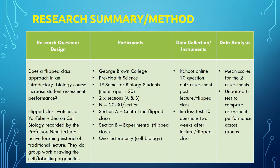I will be doing this experiment at George Brown College, choosing pre-health science first semester biology students with a mean age of around 20. There are two sections, A and B, each with about 20 to 30 students.